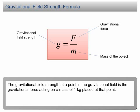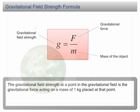For example, if there is an object of mass 2 kg placed at a point A near the Earth, and the gravitational force exerted on the object is 10 N,